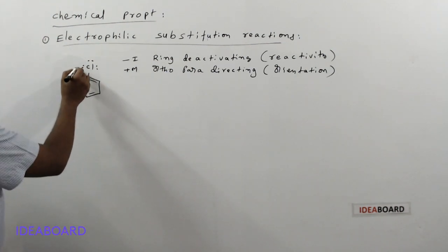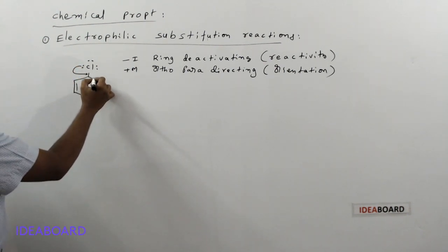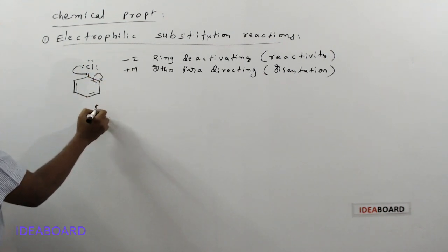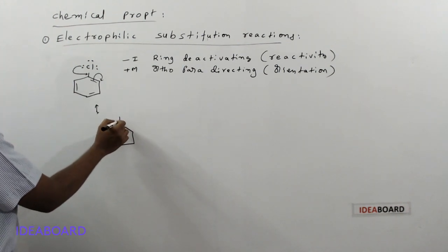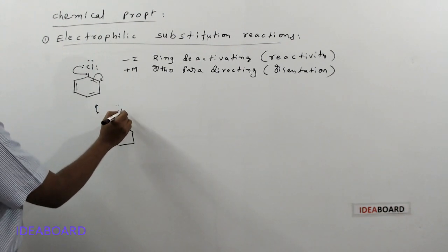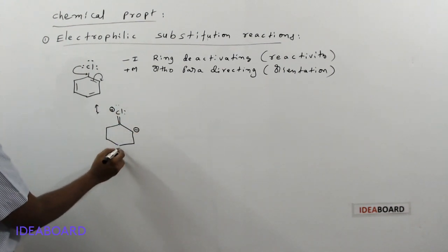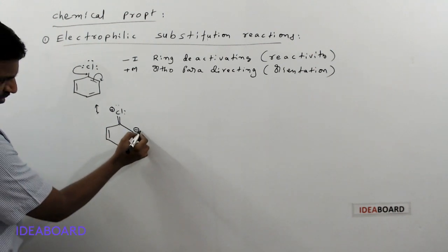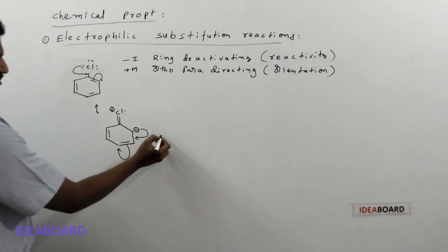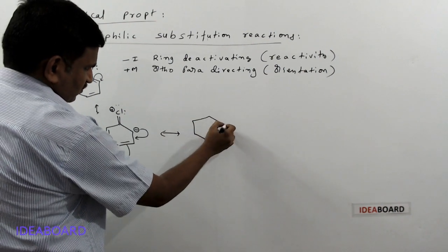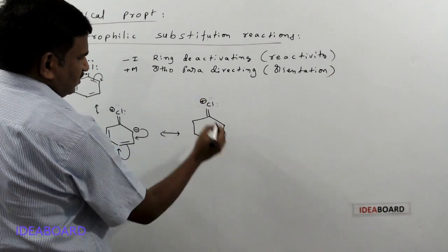To show how it is ortho-para directing: if you take the lone pair of chlorine, it is donated to the adjacent carbon atom, and this pair of electrons shifts onto the adjacent carbon. We can write a resonance structure — here we get a partial double bond nature, with two lone pairs and a positive charge on chlorine, and a negative charge on the adjacent carbon. The lone pair electrons then shift further along the ring.